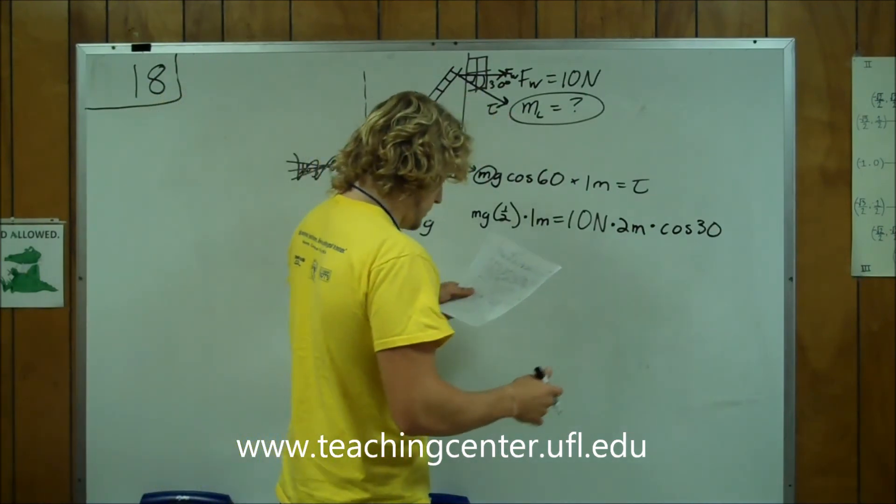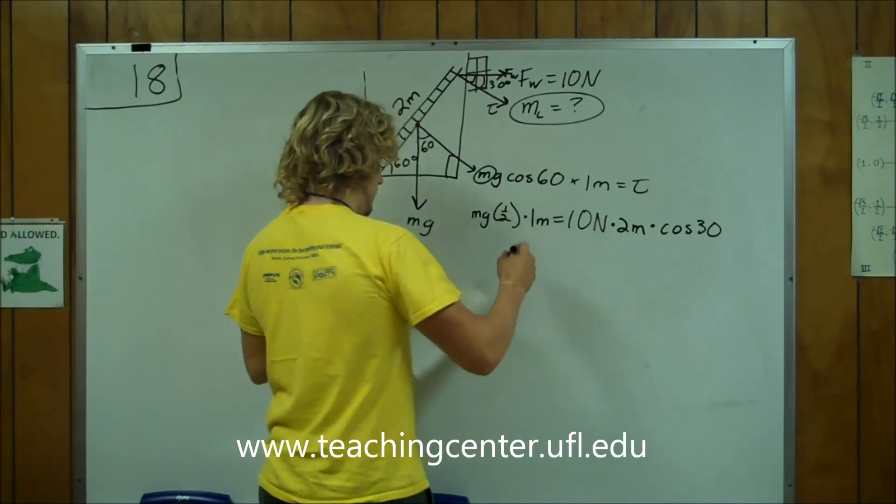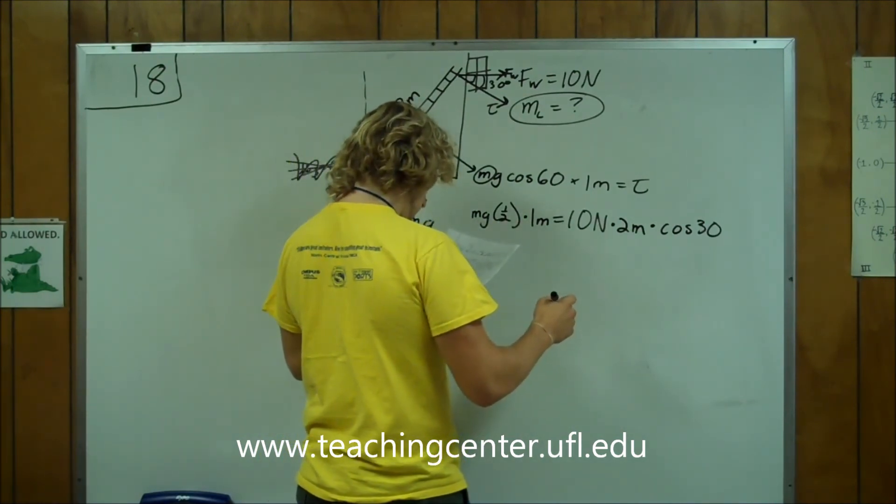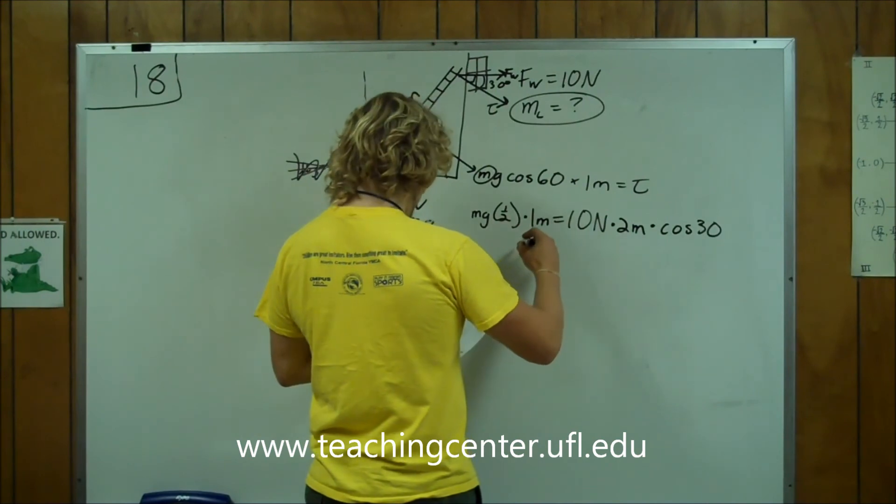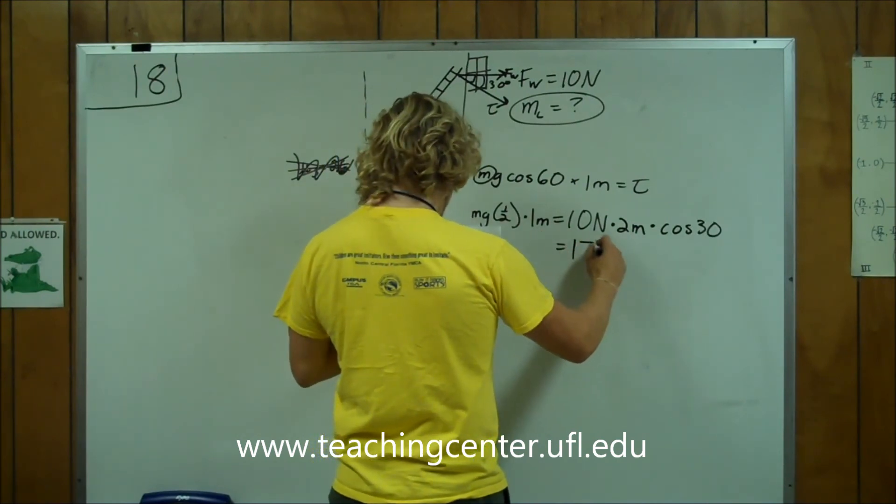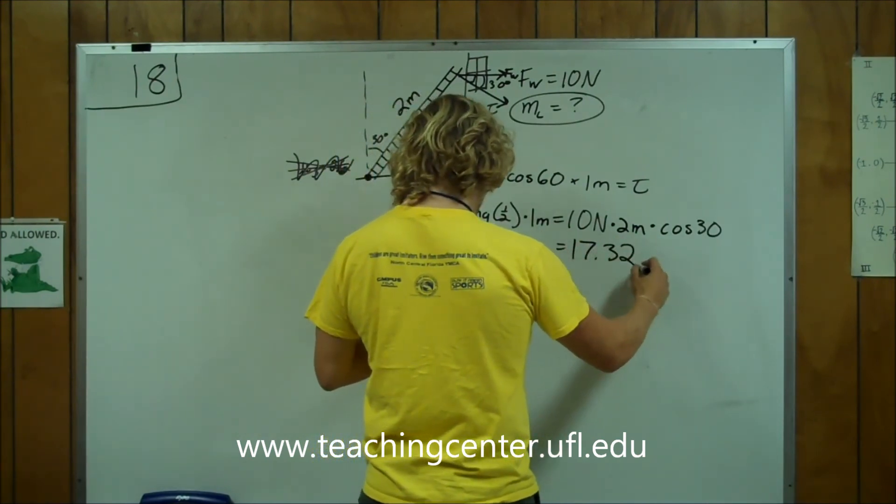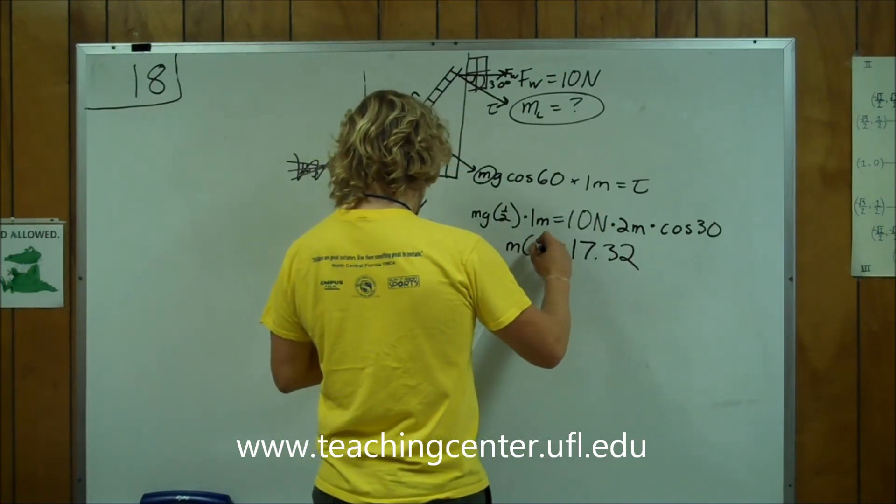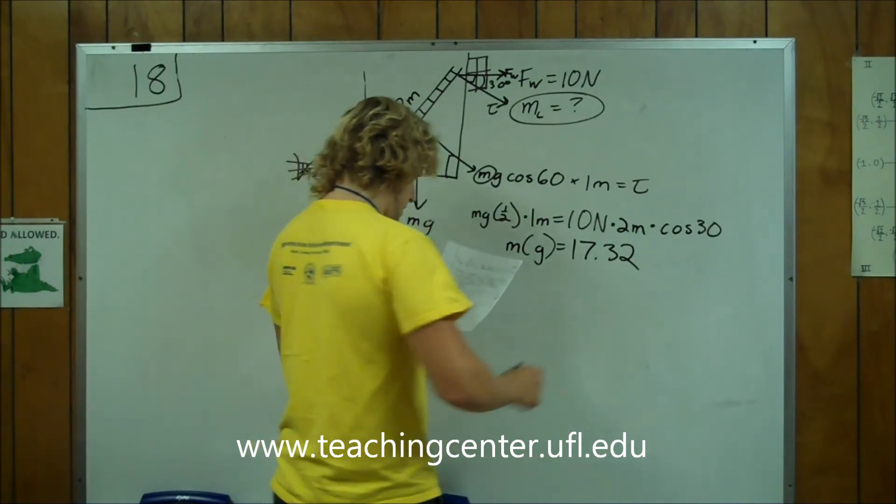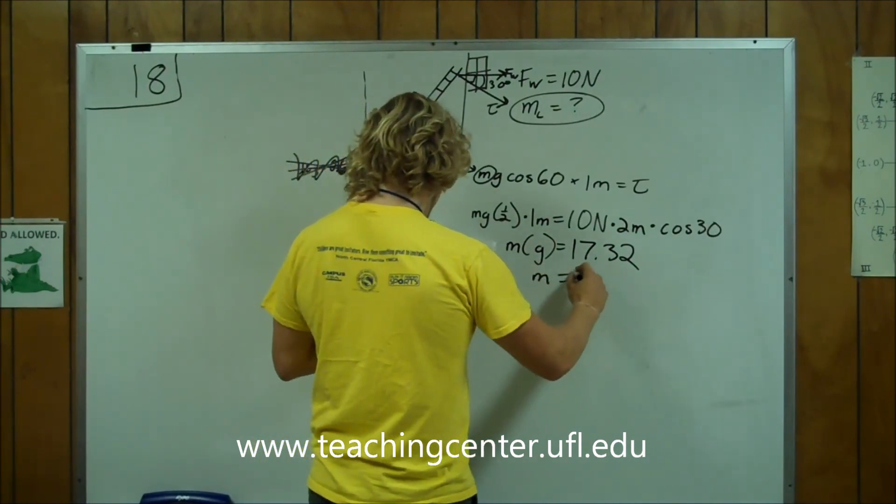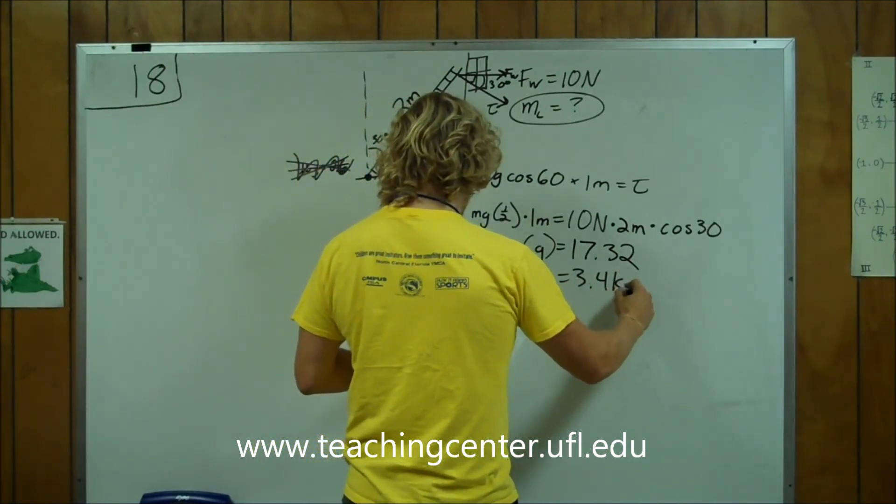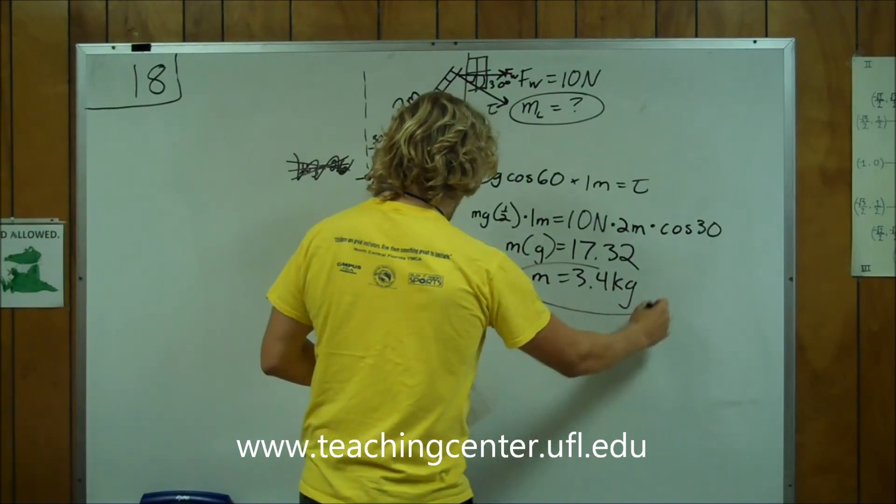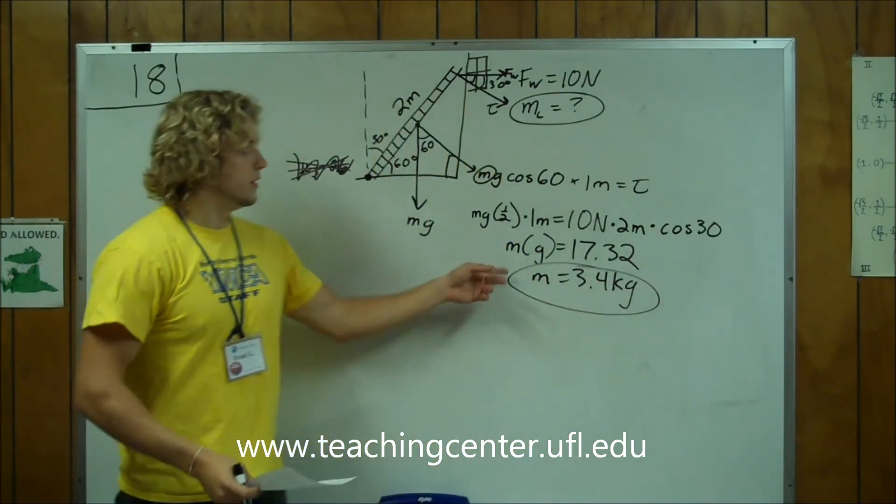Anyways, so, after you figure that out, we find out that, we find out that this is equal to 17.32, and this is going to be m times g. And then, so we find out that m is equal to 3.4 kilograms. That's how heavy the ladder can be.